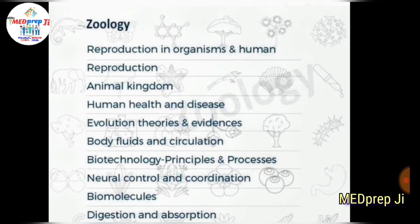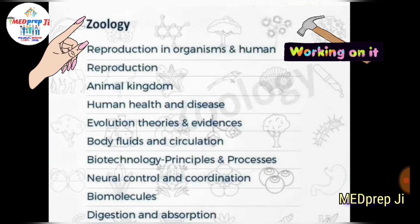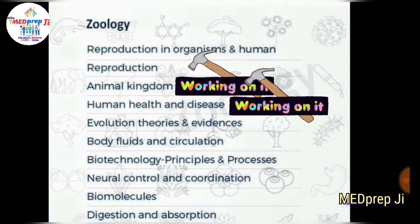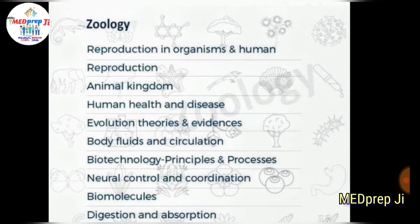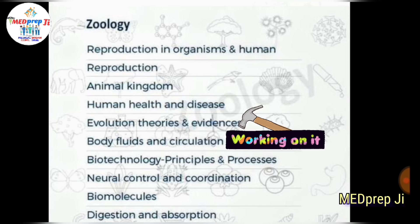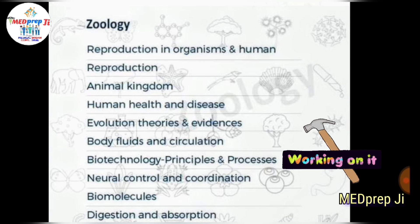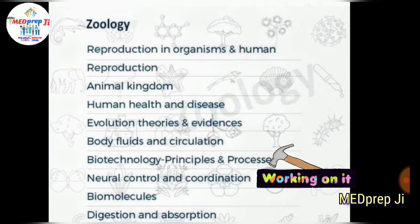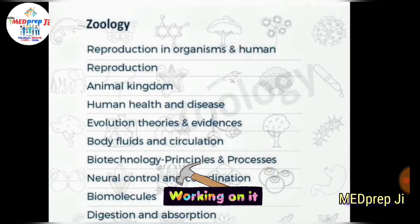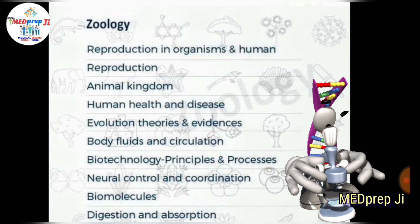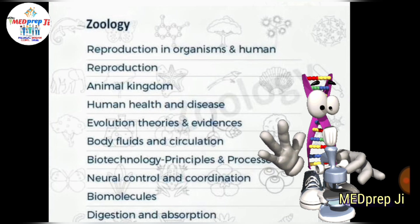In Zoology: rank first goes to Reproduction in Organisms and Human Reproduction; rank two goes to Reproduction; rank third goes to Animal Kingdom; rank four goes to Human Health and Disease; rank fifth goes to Evolution: Theory and Evidence; rank fifth goes to Body Fluids and Circulation; rank sixth goes to Biotechnology: Principles and Processes; rank seven goes to Neural Control and Coordination; rank seven goes to Biomolecules; and rank eight goes to Digestion and Absorption. The zoology portion is very important for any entrance exam, so do not skip it.